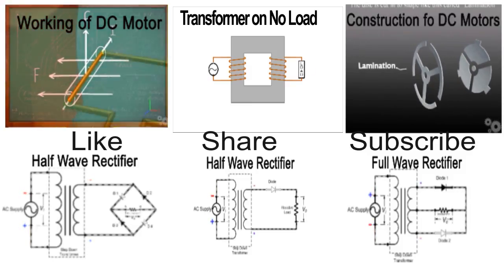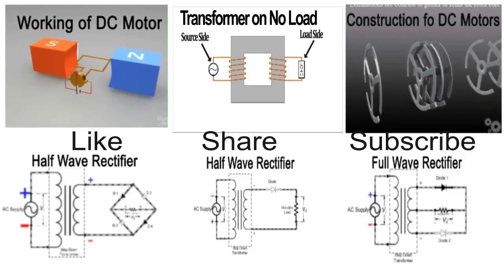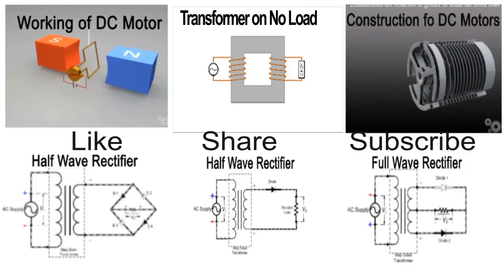The conductor is made free to move, it rotates in the magnetic field. The conductor moves perpendicular to both the direction of field and current.